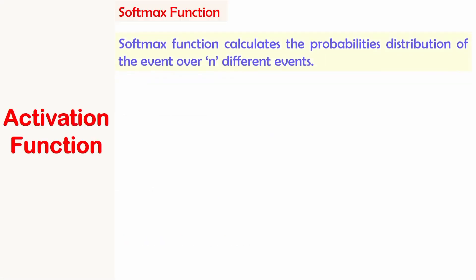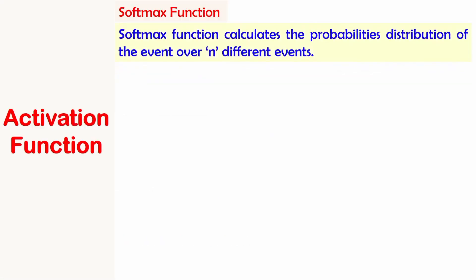The next commonly used activation function is the softmax function, which is mostly used in the output layer. The softmax function calculates the probability distribution of an event over n different events. It is given by σ(z)_j = e^(z_j) / Σ(i=1 to n) e^(z_i), for j varying from 1 to n.